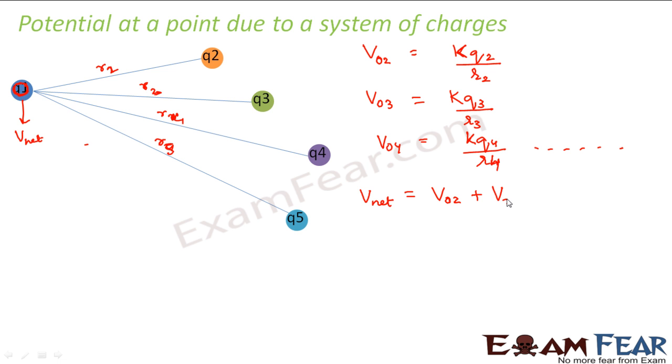So whenever you have to calculate the total potential at some point, it will be the algebraic sum of all the potentials at that point due to the different charges. So the net potential will be equal to potential due to 2 plus potential due to 3 plus potential due to 4 plus potential due to 5.